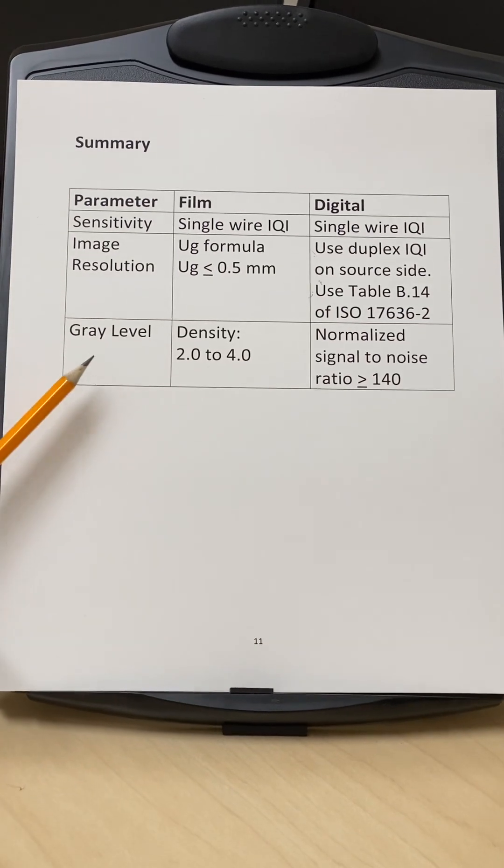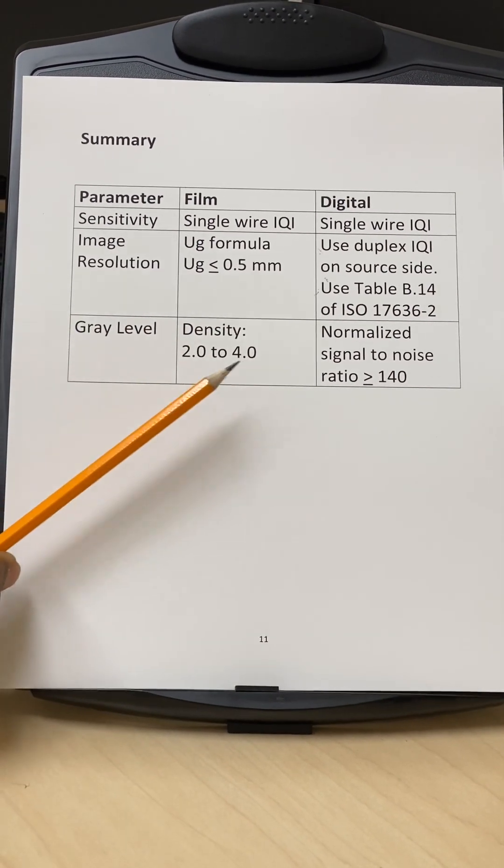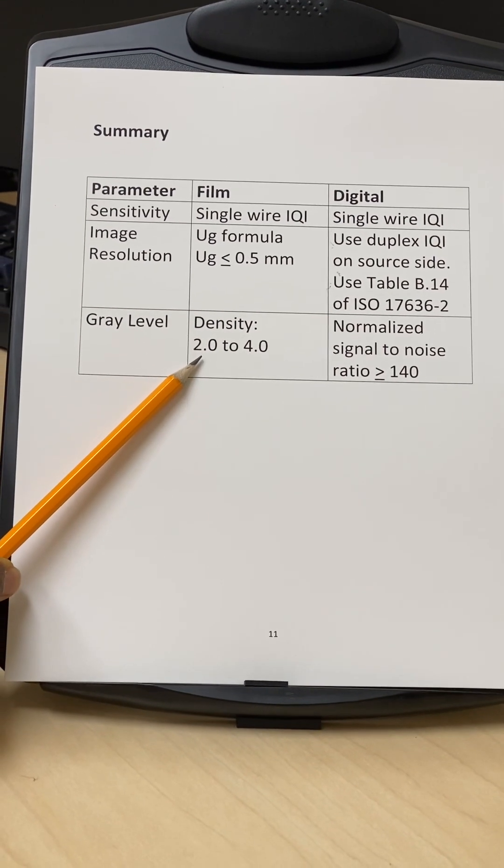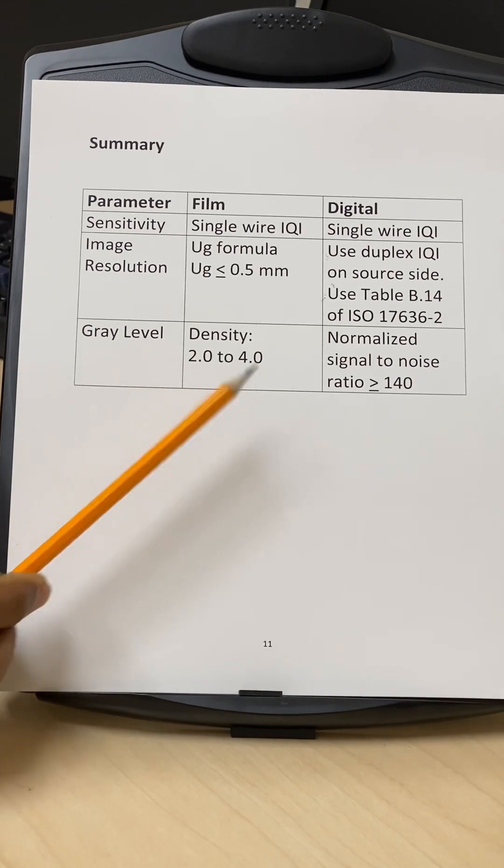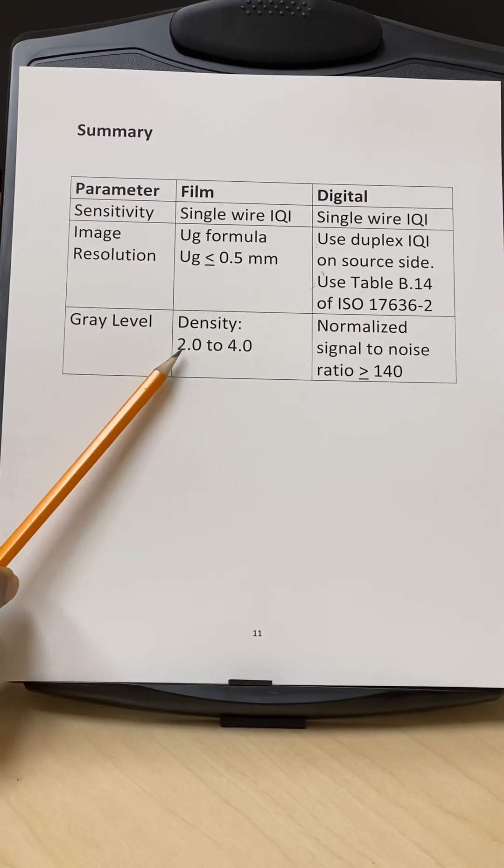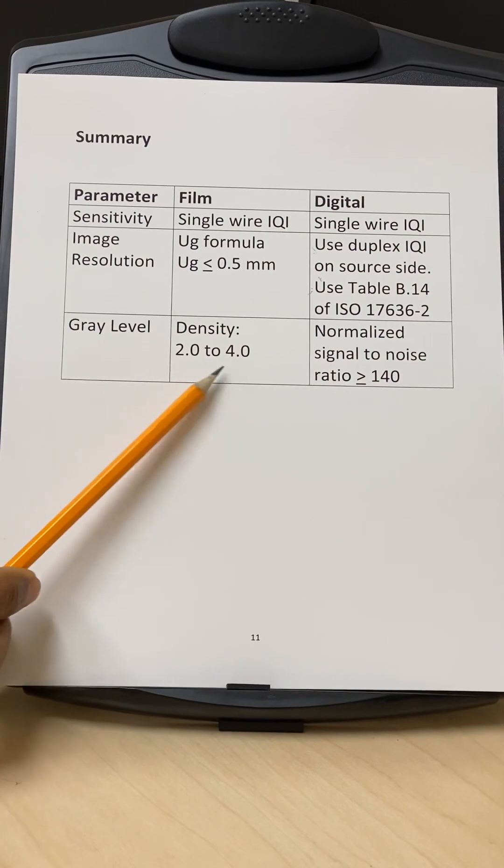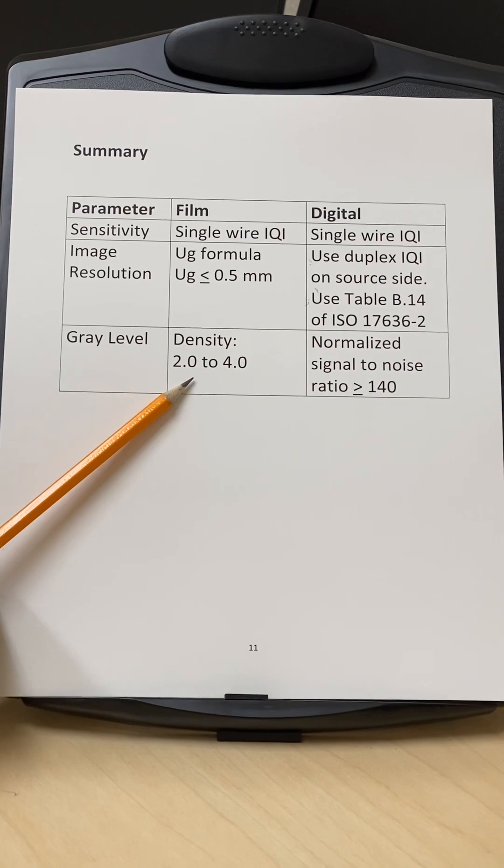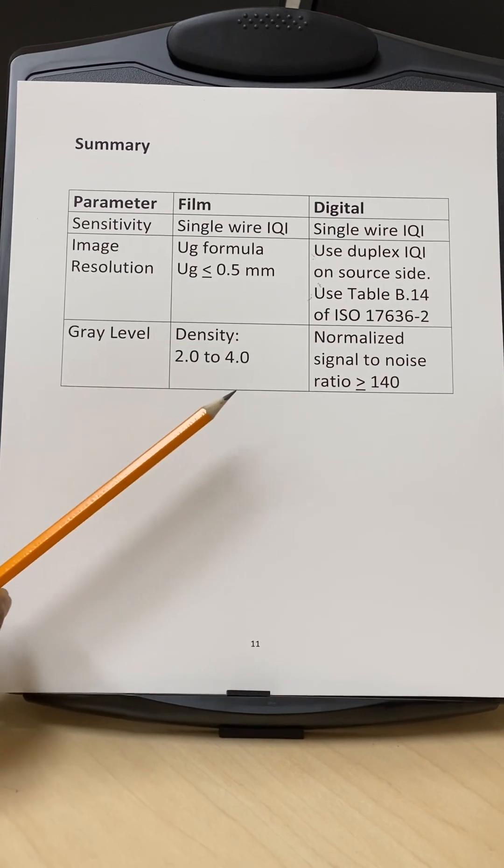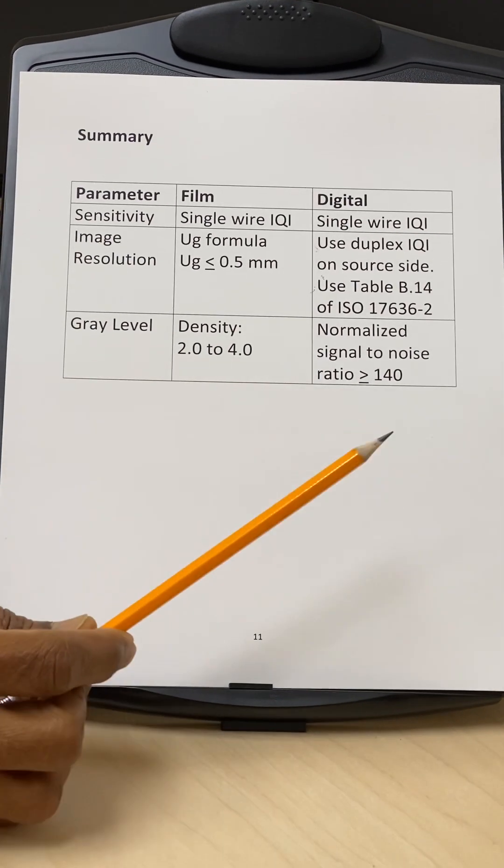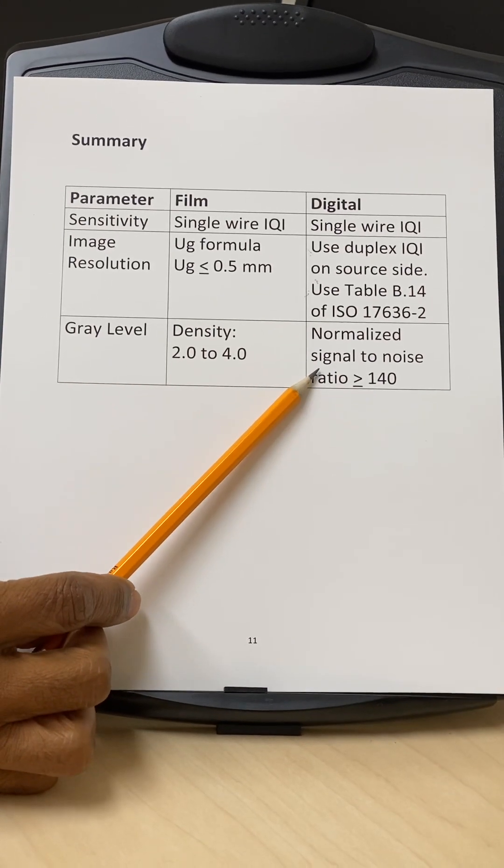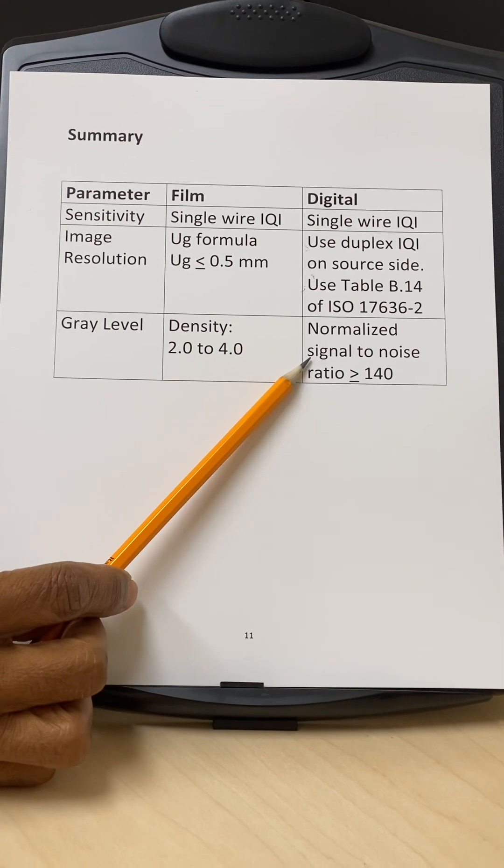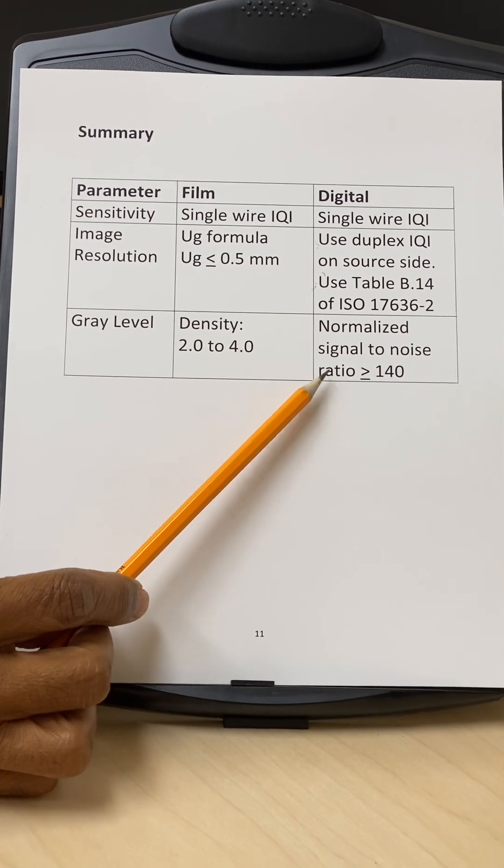And finally, for film, we actually define the gray level as the density of the film, which is from acceptable level is from 2.0 to 4.0. In some cases, the code will say 1.8 to 4.0, but basically it's in this range. But that's not applicable to the digital radiography. And for digital radiography, we have to use what's called the normalized signal to noise ratio on the parent metal adjacent to the weld. And this ratio should be greater than 140.